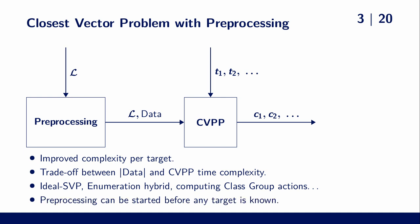Also important to note is that the preprocessing can be started before any target is known. As in cryptography the lattice is often already known in the form of a public key, a long offline computation can already be done to speed up the online part of an attack.